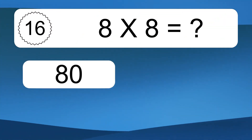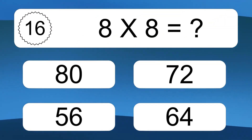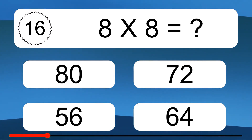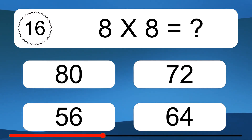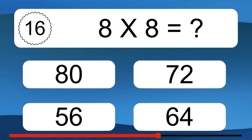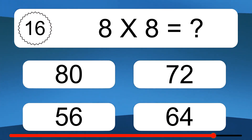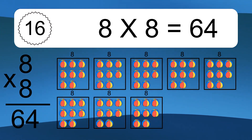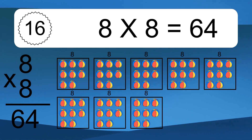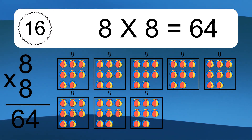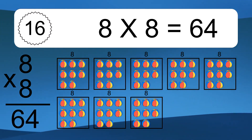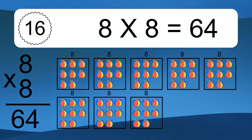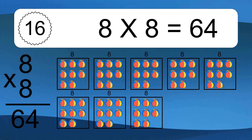8 times 8 equals what? 8 times 8 equals 64. We have 8 boxes and each box has 8 colorful balls inside. If you count all the balls in all the boxes together, you will have 8 times 8 balls. This equals 64 balls.